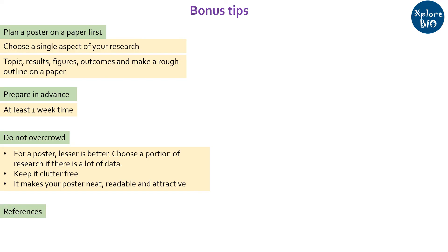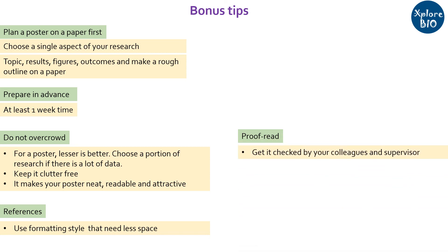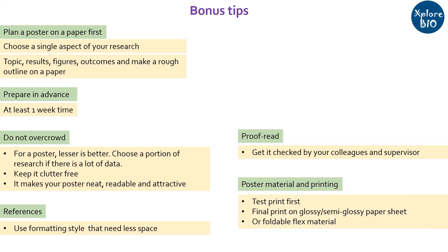Choose a reference format that requires less space. After completing the poster, proofread it several times and give it to your colleagues and supervisor to find mistakes and suggest improvements. Take an A4 size printout to check the overall layout and formatting. Once everything is finalized, take the full-size printout on glossy or semi-glossy paper for a more professional look. Do not forget to borrow a poster case, or alternatively get it printed on flex material if you want to fold it, though its overall quality may not be as good.